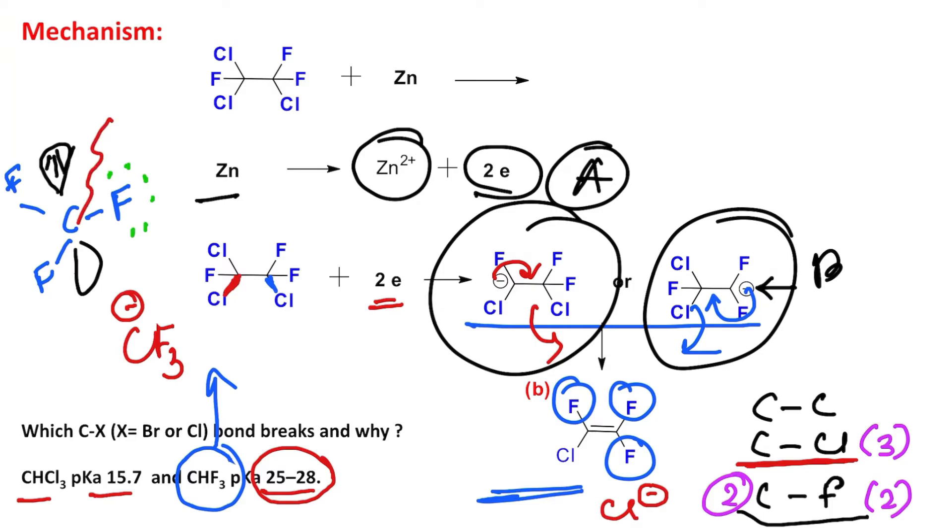Which can accommodate the electron density and help to delocalize the electron density to some extent. That is why the corresponding carboanion of CCl₃⁻—the conjugate base of chloroform—is more stable.